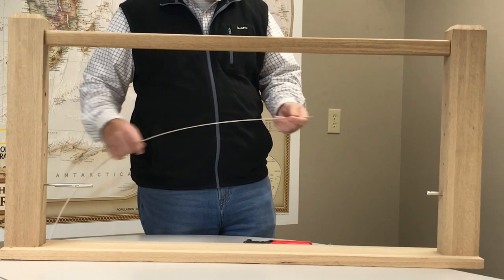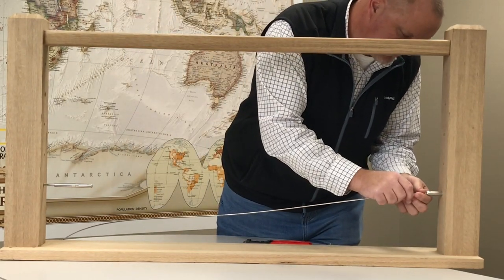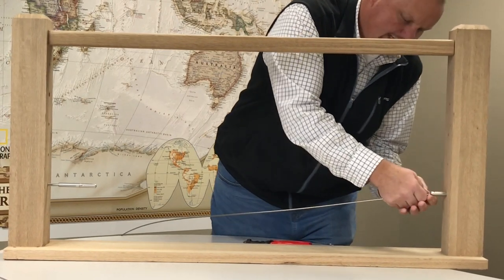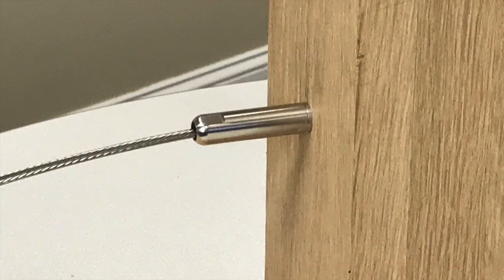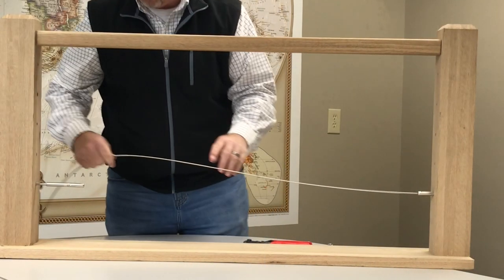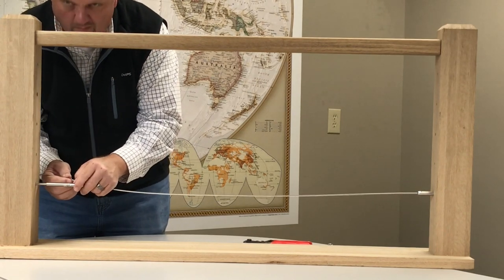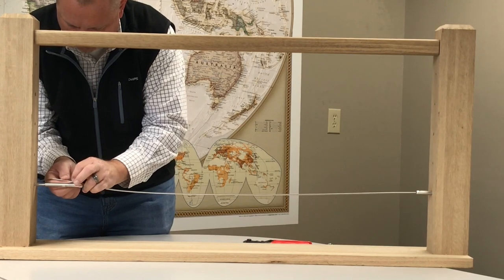Next we're going to install the cable. So you're going to go to the non-tensioning end first. You're going to insert your cable and turn it clockwise into this pull lock fitting and then pull back on it to ensure that it's in there correctly. Then bring it over to your tensioning end and there's going to be a score mark on this fitting where you're going to want to mark your cable and cut it from there.